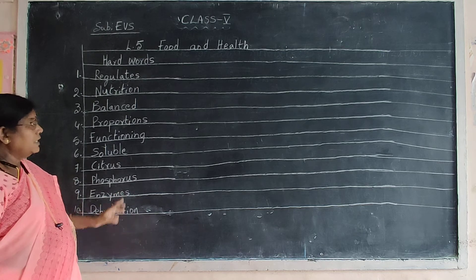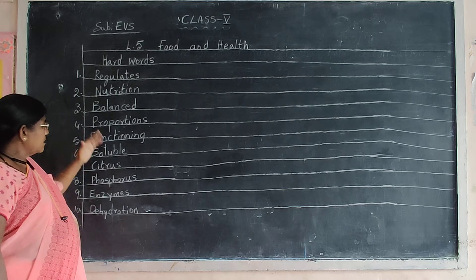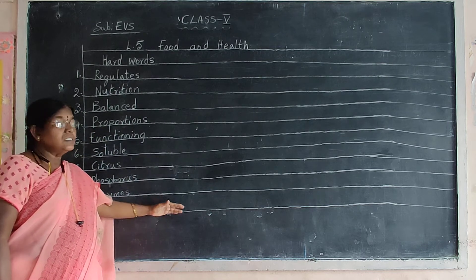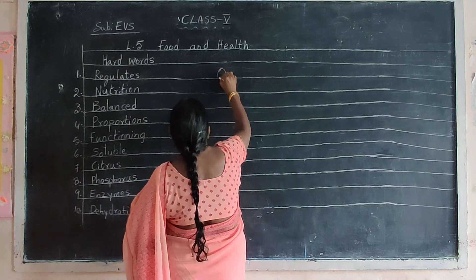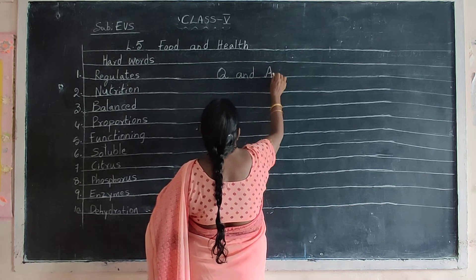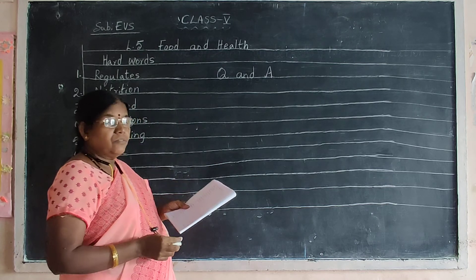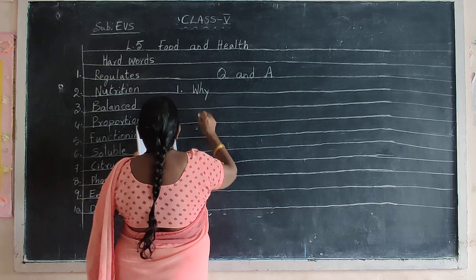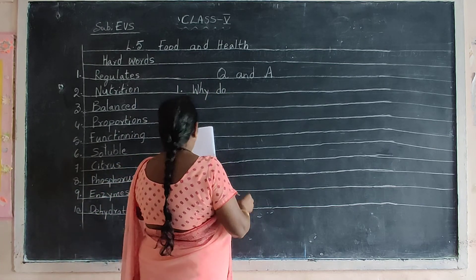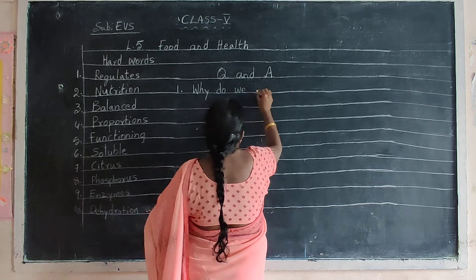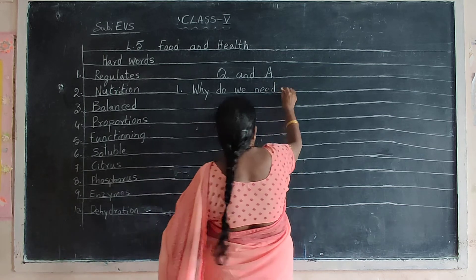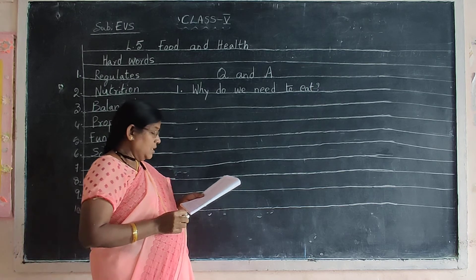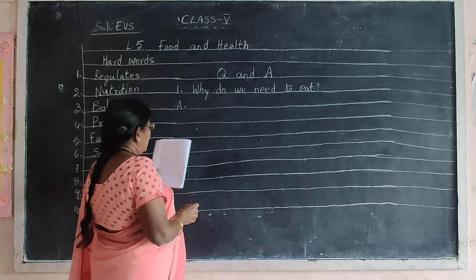Okay Nana, now write Question and Answers. You write the question and answers after completing the hard words. Leave one line and put the heading: Question and Answers. Q and A. First question, put one in the margin.